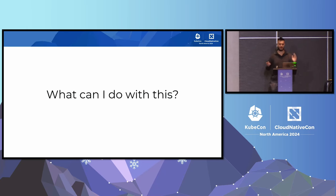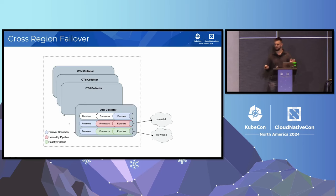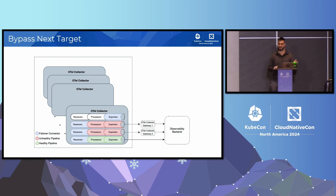So what can I do with this? Going back to the problem we were trying to solve — we want a way to handle prolonged downstream failures, and that's exactly what the failover connector allows us to do. I'll quickly go over a few potential architectures, and this list is definitely not exhaustive. First, probably the simplest: cross-region failover. You're running active-active in multiple regions, one of them goes down, and assuming you're scaled properly to handle the increase in traffic, you can now route all of your data to the other region. Second, bypassing the next target — let's say you're using the agent-gateway collector model and you have an issue with your gateways. You can set a last-priority rule in the connector to export directly to your observability backend. You might lose some optimizations or enhancements you're doing on the gateway side, but the important part is that data won't be lost.